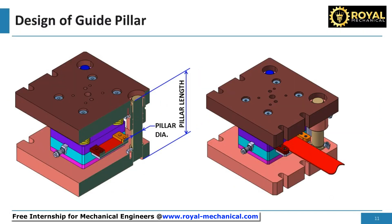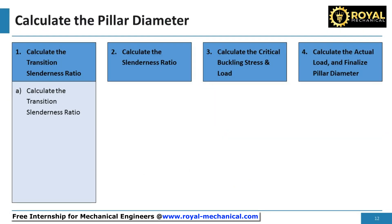Next, let's calculate the pillar diameter. Pillar diameter calculation is a four-step process. In step 1, we will calculate the transition slenderness ratio. In step 2, we will calculate the slenderness ratio. In step 3, we will calculate the critical buckling stress and the critical buckling load. In step 4, we will calculate the actual load on the pillar and finalize the pillar diameter.